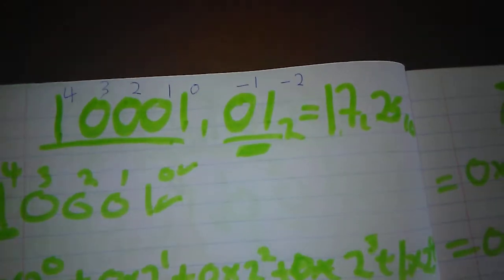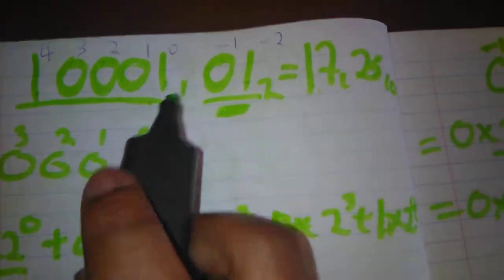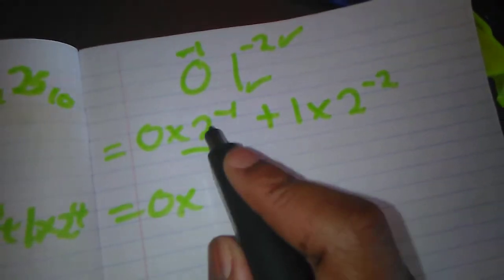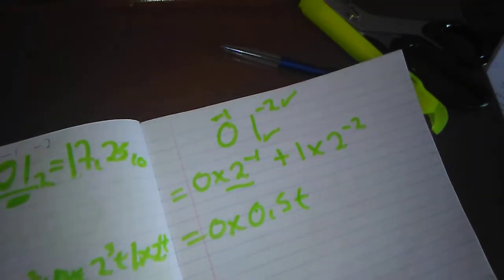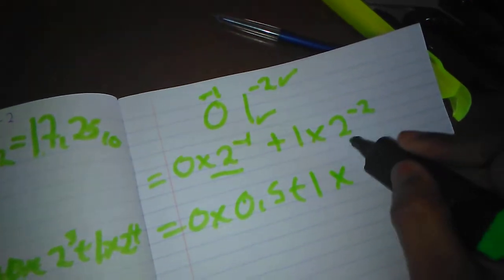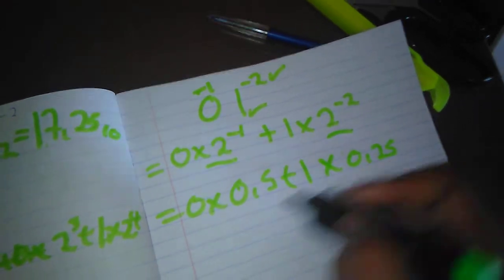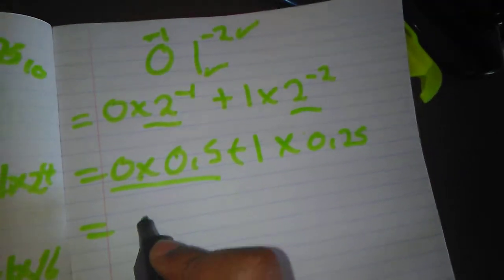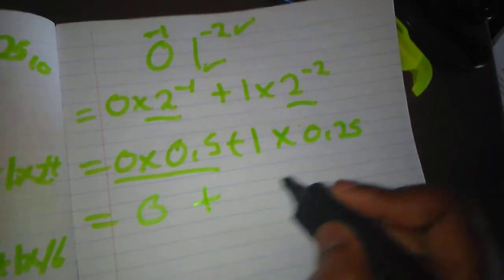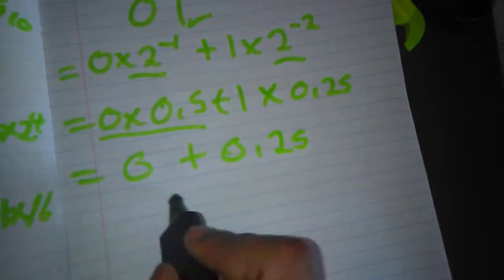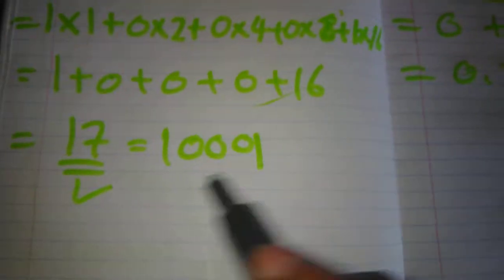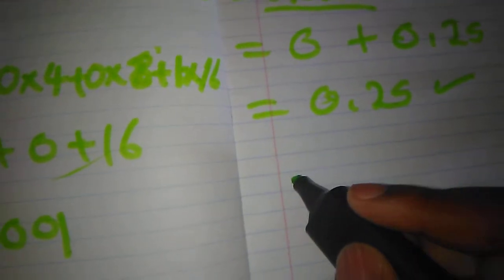We already have the answer of 17 for the left part, which is 1 0 0 0 1. Now for the right part, zero one: two to the exponent minus one equals 0.5, plus one multiply by two to the exponent minus two, which equals 0.25. Now the multiplication: zero multiply by 0.5 equals zero, plus one multiply by 0.25 equals 0.25. When we add them, the answer is 0.25. Now I want you to pay attention — we take this answer and add it to the 17 we got for the first part.